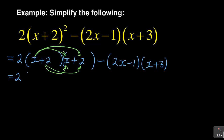So x times x gives us x squared. And x times 2 gives us positive 2x. Then positive 2 times x, which is positive 2x. And positive 2 times positive 2, which is positive 4. Then you close the bracket.